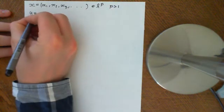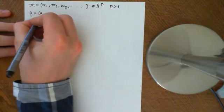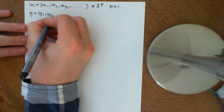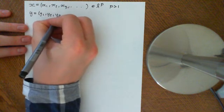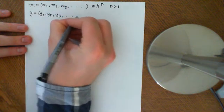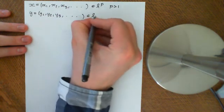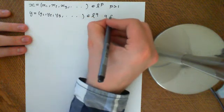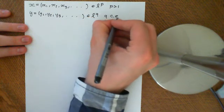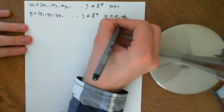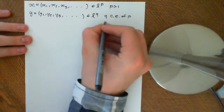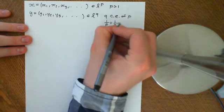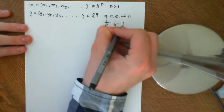We started off with y, which was a sequence y1, y2, y3, etc., which was an element of LQ, such that Q was the conjugate exponent of P, meaning that 1 over P plus 1 over Q was equal to 1.